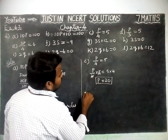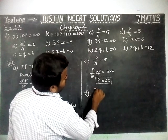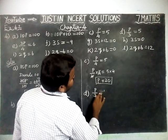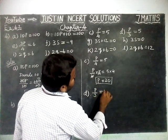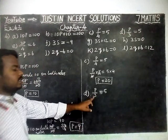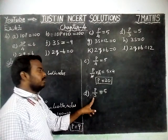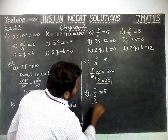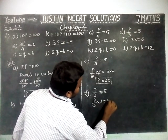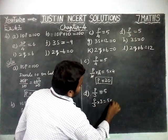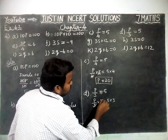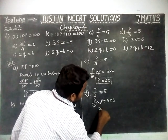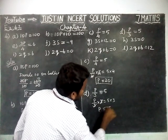Next, Part D: P by 3 is equal to 5. We have to cancel the denominator, so we are going to multiply by 3. P by 3 into 3 is equal to 5 into 3. 3, 3 gets cancelled. 5 threes are 15. So, P is equal to 15.